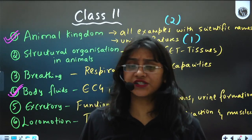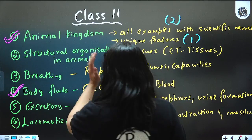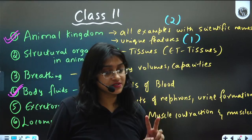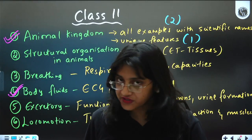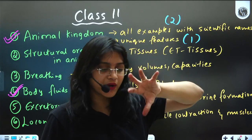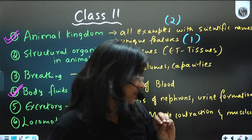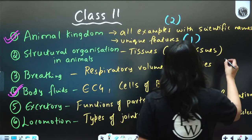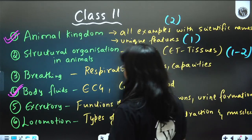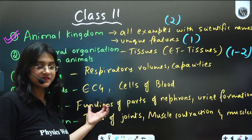From Structural Organisation in Animals, questions are asked every year — for sure from cockroach and from tissues. Tissues is a smaller topic, so if you study it well you can easily answer one to two questions from this particular chapter.